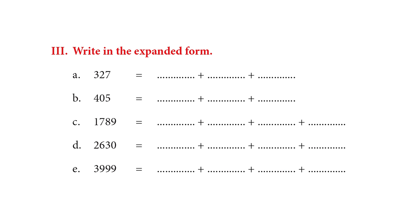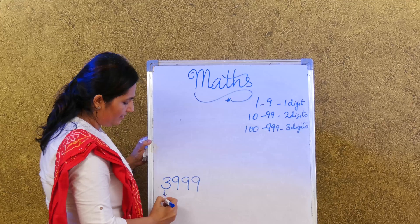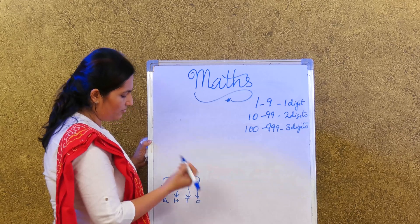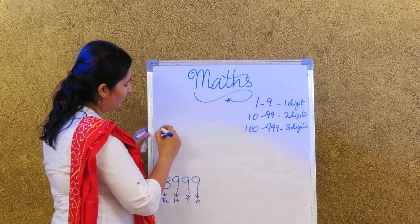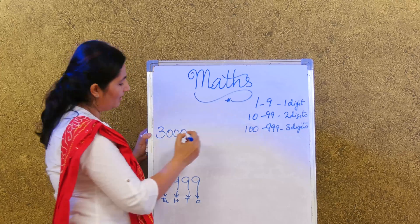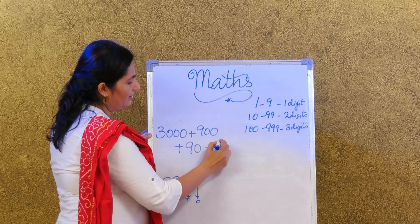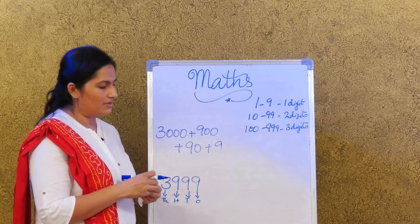You have a few exercises to practice. Let's take one more example — a 4-digit number, 3999. It has thousands, hundreds, tens, and ones. The expanded form of 3999 is 3000 plus 900 plus 90 plus 9. The concept does not change — it's just that we now have 4-digit numbers.